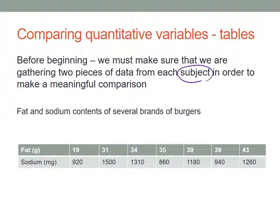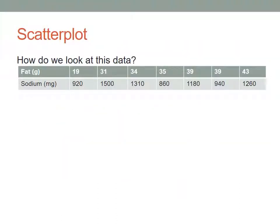In this case we're looking at the fat and sodium contents of several brands of burgers from fast food restaurants. I'm hoping that these are paired by restaurant - maybe this is Burger King, McDonald's, Arby's - you get my point here. These need to be paired data. We want two pieces of information from one experimental unit, from one subject.